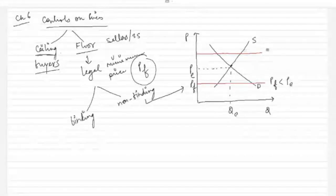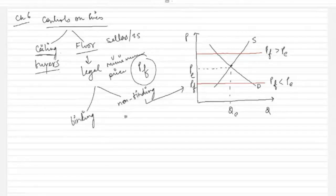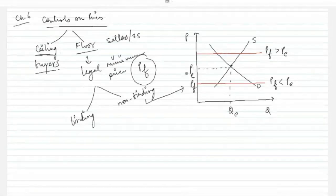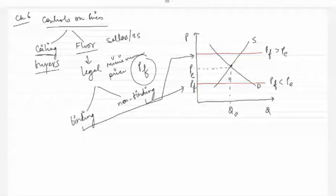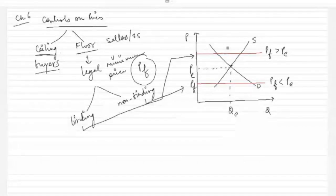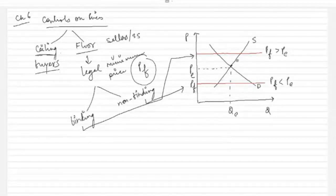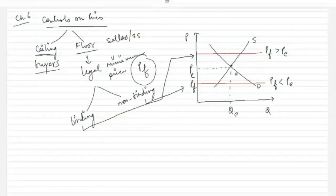Let's look at the case where price floor is greater than the equilibrium price. In this case, the government says this is the minimum price at which you can sell this commodity, but the market is selling at a lesser price. So the price floor becomes binding. Why binding? Because now the market equilibrium price will not prevail — the market will sell at PF instead, because the government has set PF as the minimum price, and PE is less than PF.